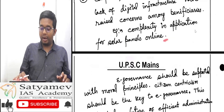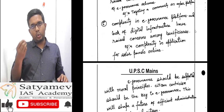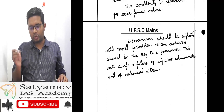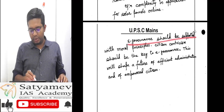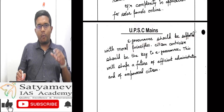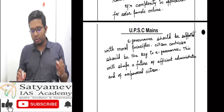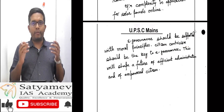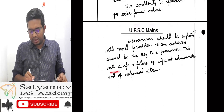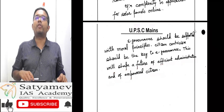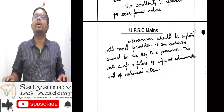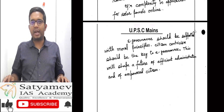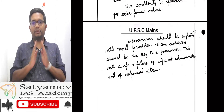For this 10-marker question, we have already given 10 points and two paragraphs for the first part. Moving towards the conclusion: e-governance should be supported with moral principles, with a citizen-centered system as the core of e-governance. This will shape a future of efficient administration and empowered citizens. Thank you, stay connected. Namaste.